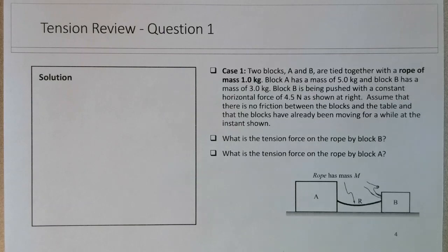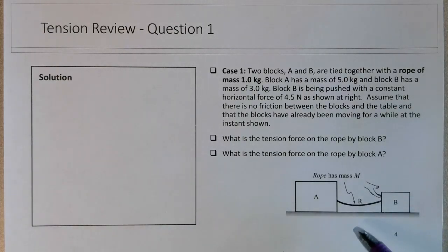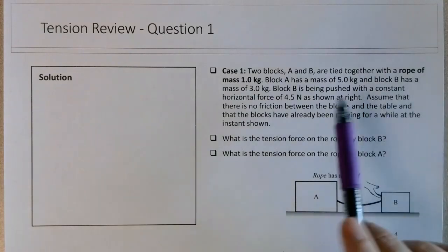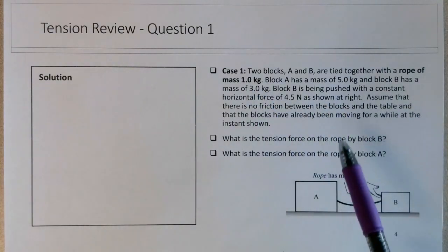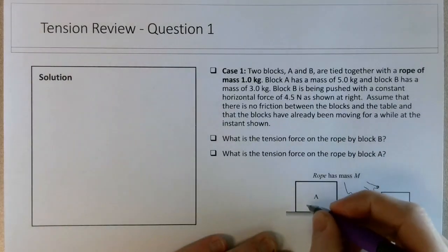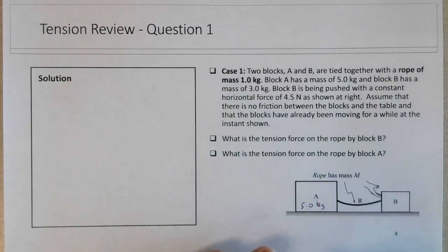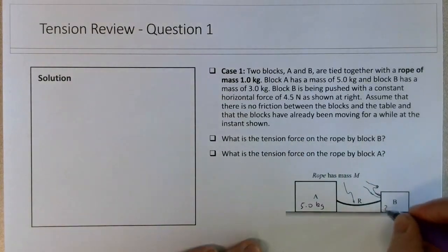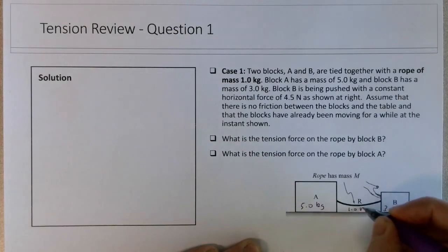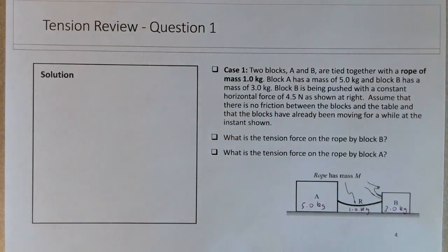In this tension review question, we're looking at a connected object system. It's also strongly connected to Newton's laws, even though the title is tension. This time the rope has mass, so we're going to have to carefully look at that particular situation. We've got two blocks A and B tied together with a rope of mass 1 kg. Block A has a mass of 5 kg, block B has a mass of 3 kg, and block B has been pushed with a constant horizontal force of 4.5 Newtons. We assume there's no friction between the blocks and the table, and the blocks have already been moving for a while.